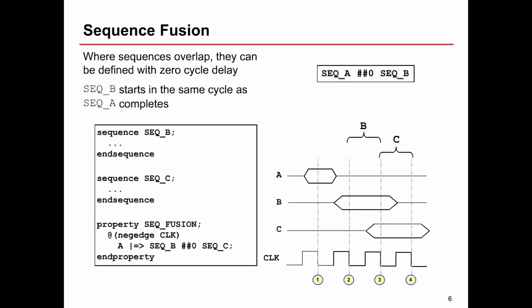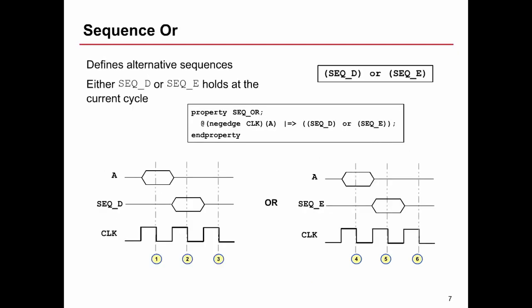Sequence fusion is where we have two sequences that we want to overlap by one single cycle. To achieve this we use the concatenation operator ## with zero. In the example, sequences B and C are multi-cycle sequences. The assertion says if A occurs, then from the next cycle sequence B starts and runs to completion. Because of ##0, the cycle at which sequence B ends is the cycle sequence C must begin. So cycle three is where sequence B ends and sequence C begins, and the assertion passes when sequence C completes at cycle four.